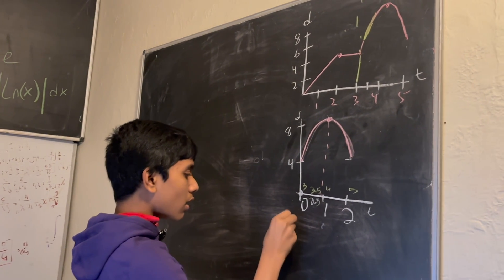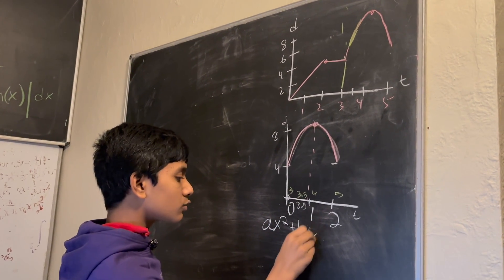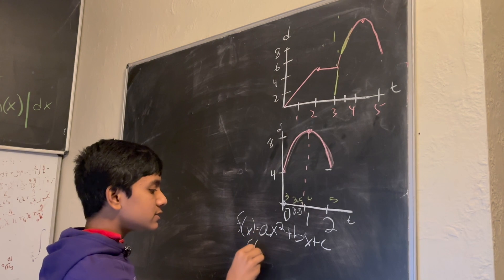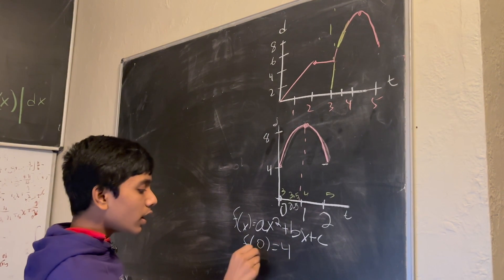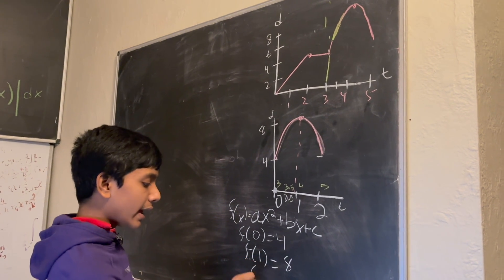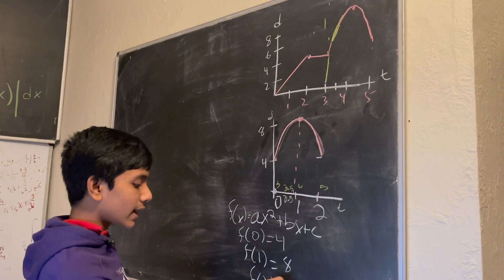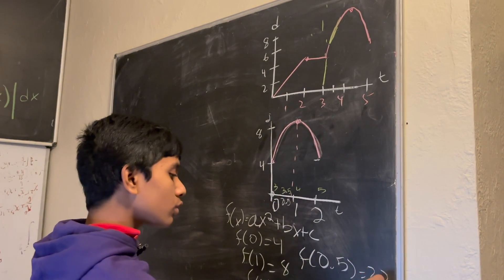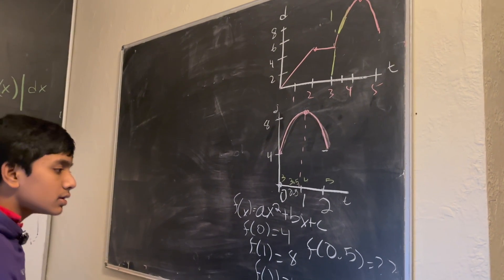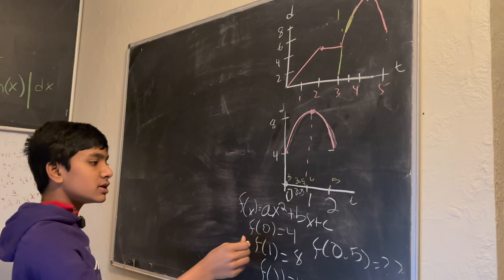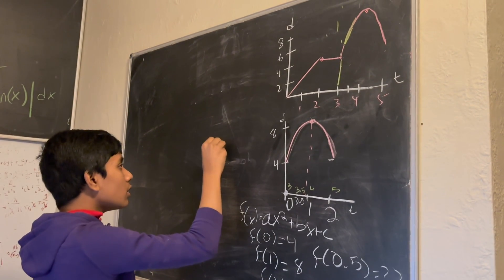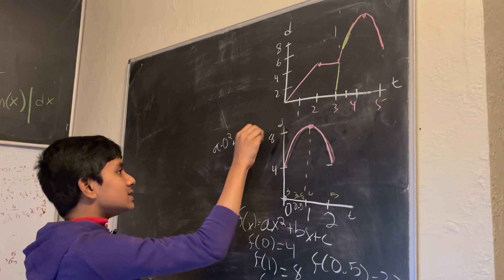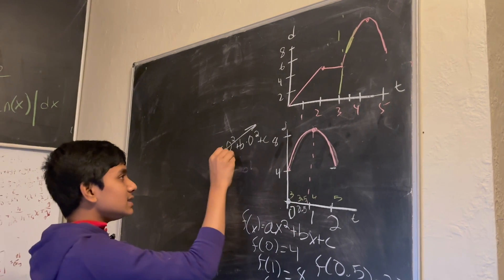As we can see, it starts at d equals four and ends at d equals four with a max displacement of d equals eight. So we get this sort of quadratic looking thing. And we have this vertex right over at t equals one in the new reference frame. So now, let's figure out what the equation of this is.